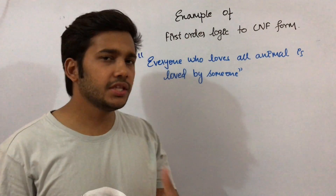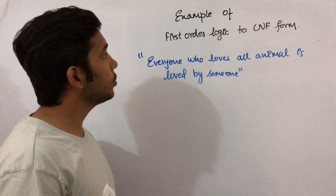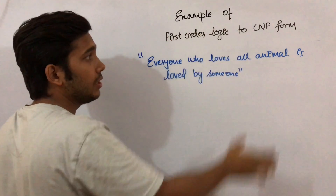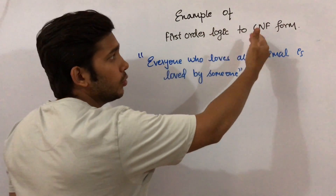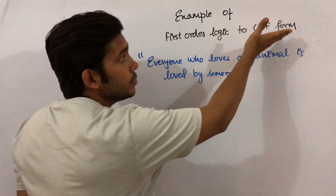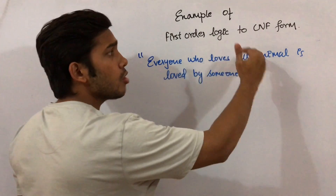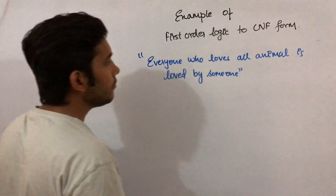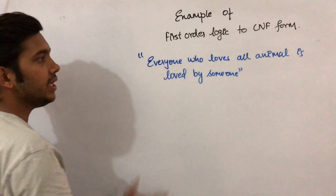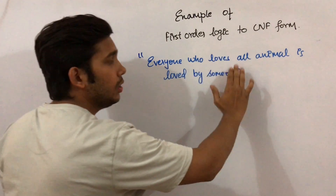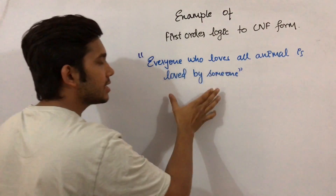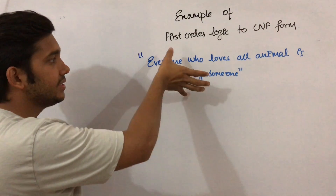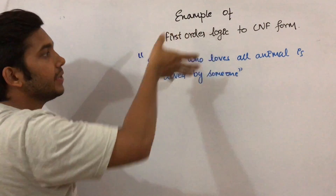In this video, I am going to talk about, with an example, how first-order logic is going to be converted into CNF form, also called Conjunctive Normal Form. Suppose this was our given statement: 'Everyone who loves all animals is loved by someone.' First, we have to write this statement into predicate logic form, or first-order logic.